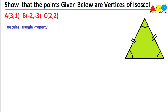Today we have to show that the points given below are the vertices of an isosceles triangle. In our previous lecture we did the same practice, but the triangle in that lecture was a right triangle.